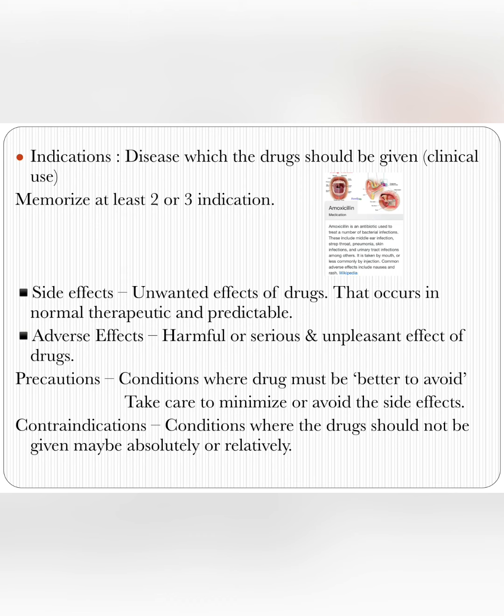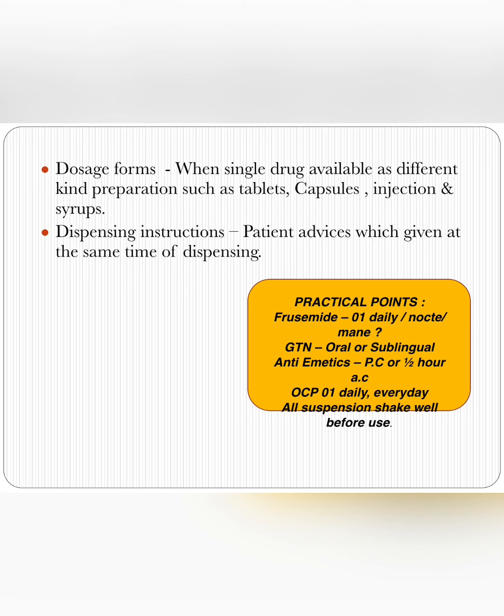Drugs act by modifying biochemical and physiological processes that normally occur in the body. Classification of drugs in most cases is according to potency and indications — that is, the disease for which the drug should be given for clinical use. You should memorize at least two to three indications of a drug, as well as the side effects, which are unwanted effects that occur in normal therapeutic doses.